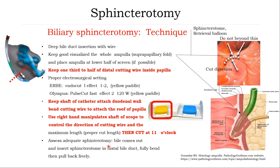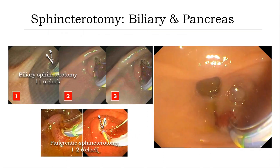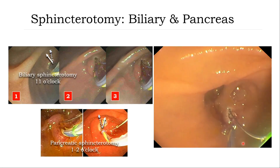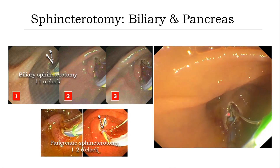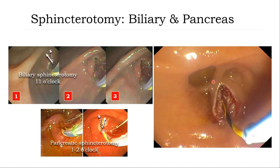Adequate sphincterotomy: you can see the bile duct come out and when you fully bow the sphincterotome, you can put a catheter in and out freely. For pancreatic sphincterotomy, same technique but cut at 1 to 2 o'clock. This short video clip shows biliary sphincterotomy at 11 o'clock: place the sphincterotome attached to the wall, bow the cutting wire, use the right hand to control the duodenoscope and cut at 11 o'clock until you reach the maximum of the supra-papillary fold.